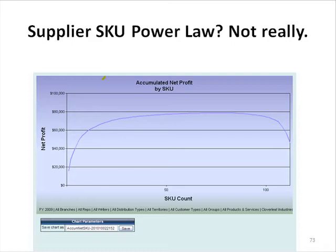On this screen I have a real case example of a supplier where the supplier had about 120 SKUs in the line — certainly the active ones. There could be some dead ones over here that didn't show up in the transaction register.